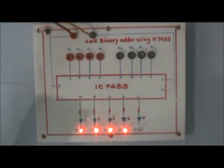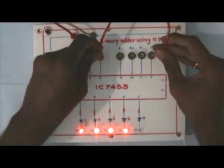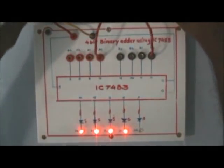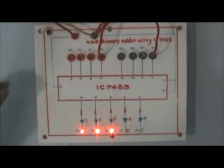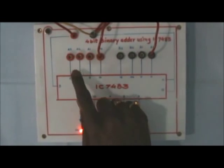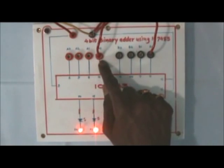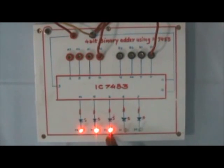Now if you take another combination, say you connect these two A0 and B0 inputs to ground using two wires, I've connected them here. The result will be entirely different. The inputs are now 1110 and 1110, so the output will be 11100.